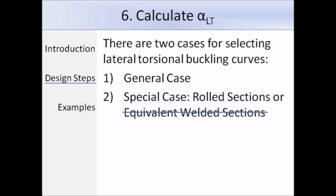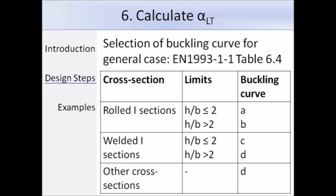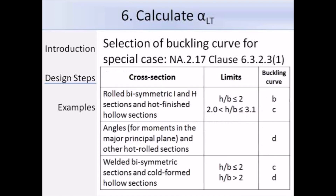For the general case, table 6.4 defines the limits for the choice of buckling curve. You work out the height-over-breadth ratio and determine the required buckling curve. You then use that buckling curve to determine alpha LT from table 6.5. However, a note states that the UK National Annex changes the values in table 6.5, so instead we should refer to the table in the National Annex under NA 2.17 clause 6.3.2.3.1.